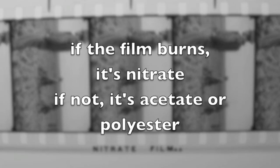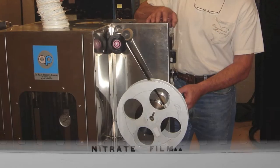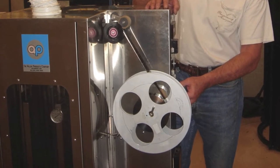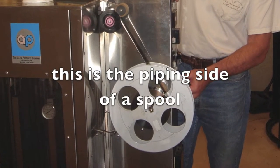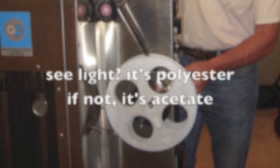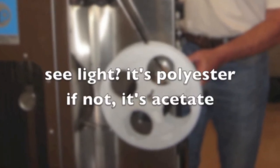If it burns, it's nitrate. If it melts, it's either polyester or acetate. If it's the latter, hold the reel up to a light source and look through the piping side of the spool. If you can see light through the film, it's polyester. If not, it's acetate.